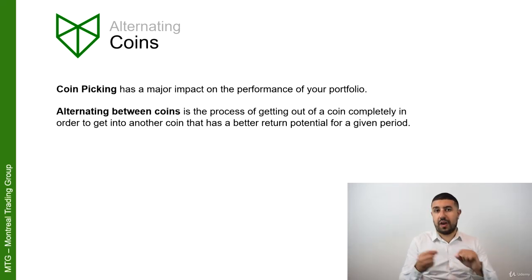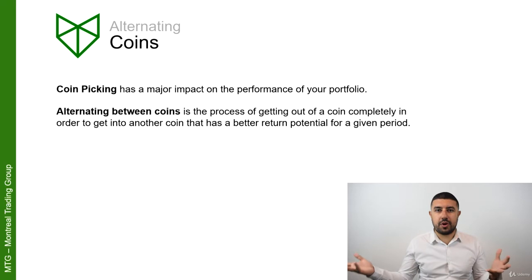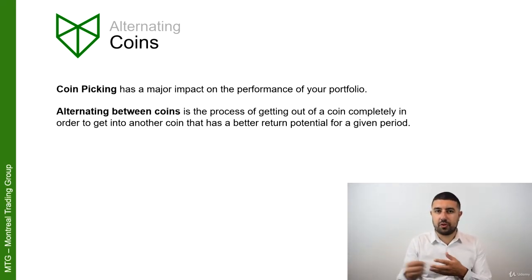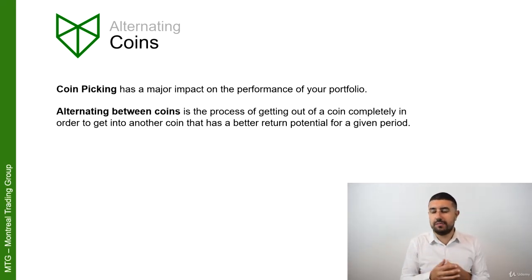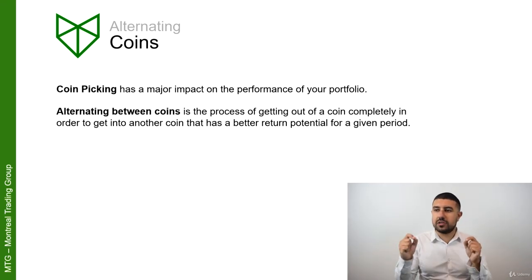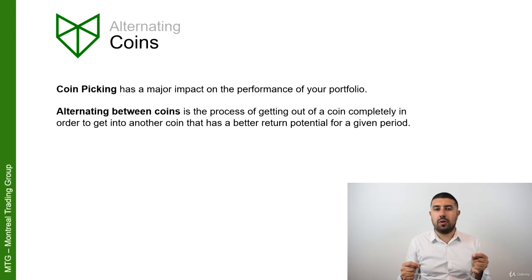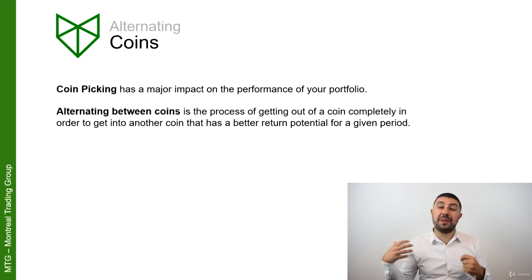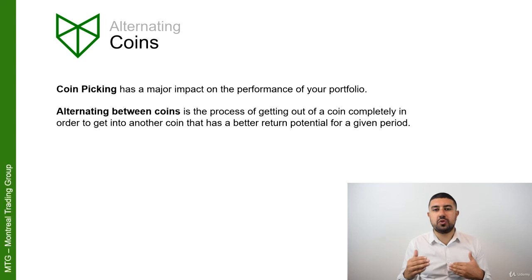If you have better coins, you're going to have better returns. If you buy something stupid like BitConnect, or a scam, or something that has no team, you're not going to make money. So selecting a solid project is very good. Something you can do to help increase your returns even more is alternating between these coins.